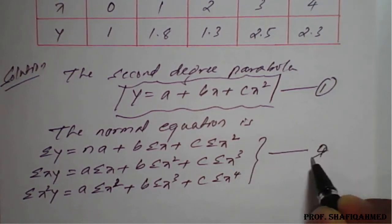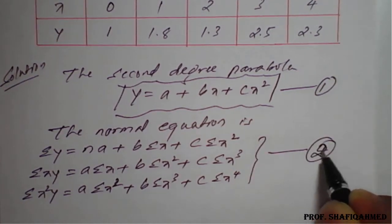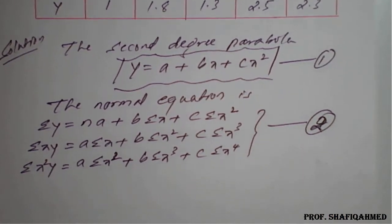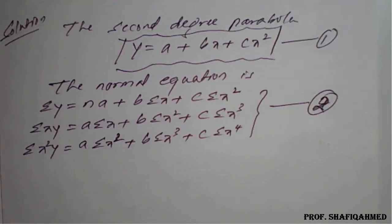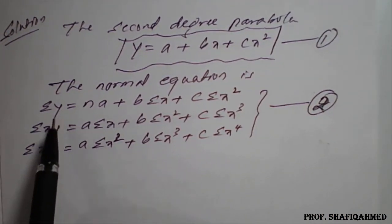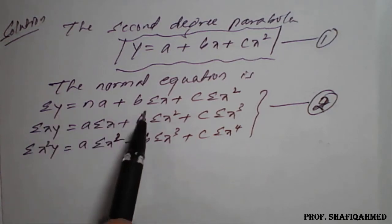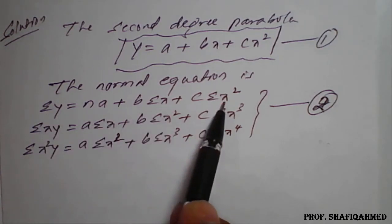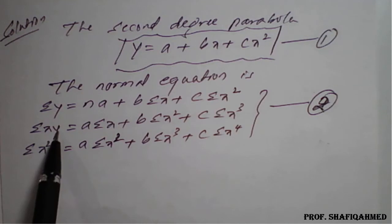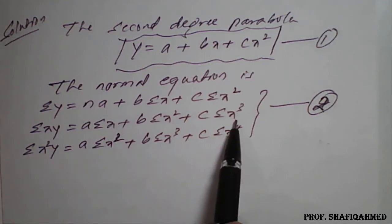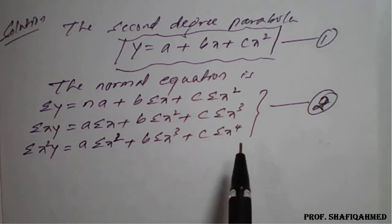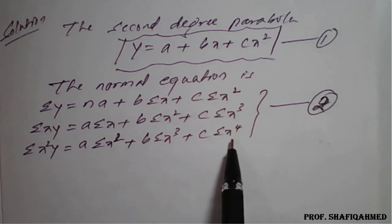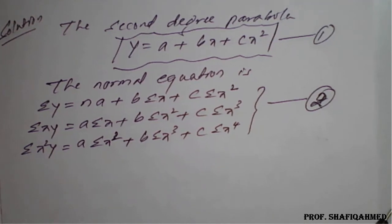This is equation number 2. To solve these, we need a table with the following columns: summation(y), summation(x), summation(x²), summation(xy), summation(x³), summation(x²y), and summation(x⁴).